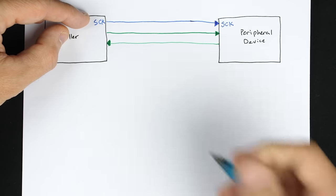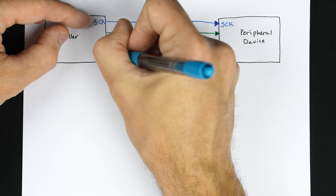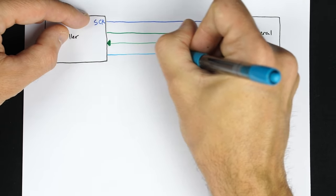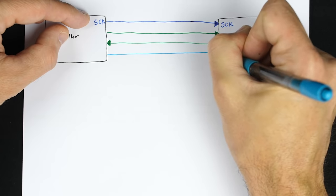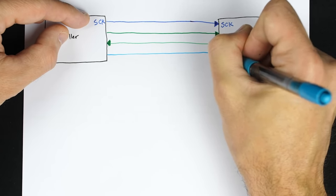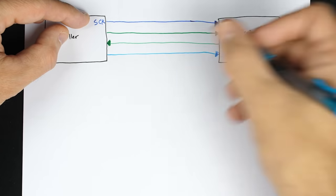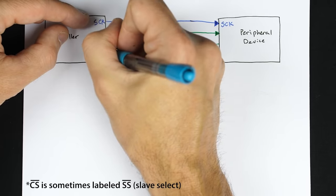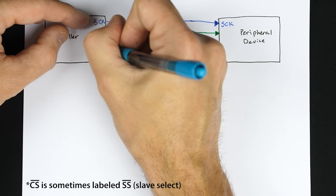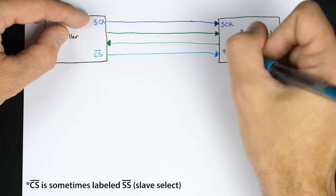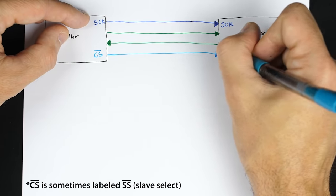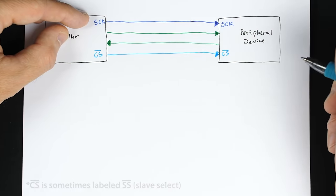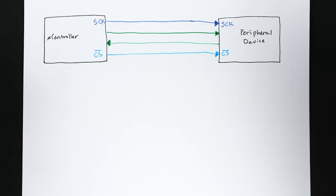There's a fourth wire which is a chip select. That goes from the controller over to the peripheral device. It's an active low signal, so it needs to be pulled low before any communication will take place.